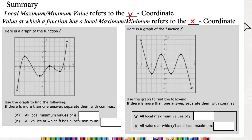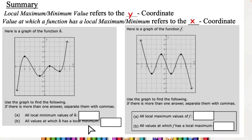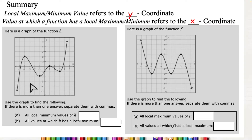If we look at the questions, they're going to ask things like 'all local minimum values of h' or 'all values at which h has a local minimum.' Pay attention to how they're asking the question, because that wording definitely changes which one they're asking for. This graph has a lot of ups and downs — it's asking for a minimum, so I'm going to look at the bottom two points. It actually has two low points.